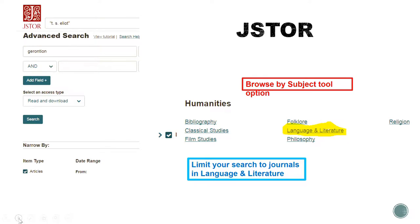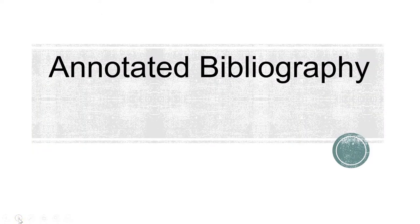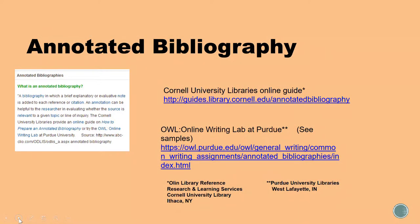In JSTOR you can use an advanced search or browse by the subject tool. For annotated bibliographies, this type of bibliography is a list of references or citations in which a brief explanation or evaluative note is added to each reference. Two sites we recommend are Cornell University Libraries Online and the OWL at Purdue. Of course, you can always contact us for more information too.